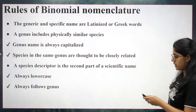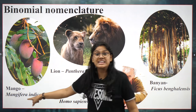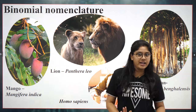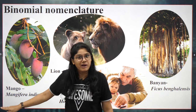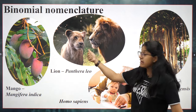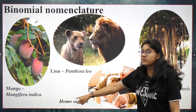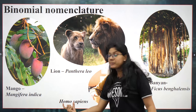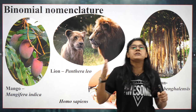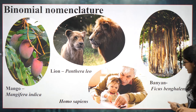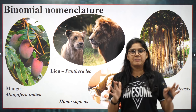Here are a few examples. Mango is called Mangifera indica — 'indica' you can remember from the Indica car, and 'mangifera' like magnifying glass. Lion's scientific name is Panthera leo. Humans are Homo sapiens — 'homo' is the genus and 'sapiens' is the species, so genus comes first and species comes after. Banyan tree is Ficus benghalensis — a long name but you'll remember it in various ways.